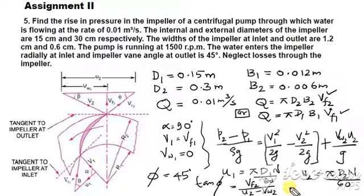And once you have VW2 and VF2, of course from this triangle you can see that V2 is actually the resultant of VF2 and VW2. So therefore V2 is equal to, using Pythagoras theorem, it is square root of VF2 square plus VW2 square.